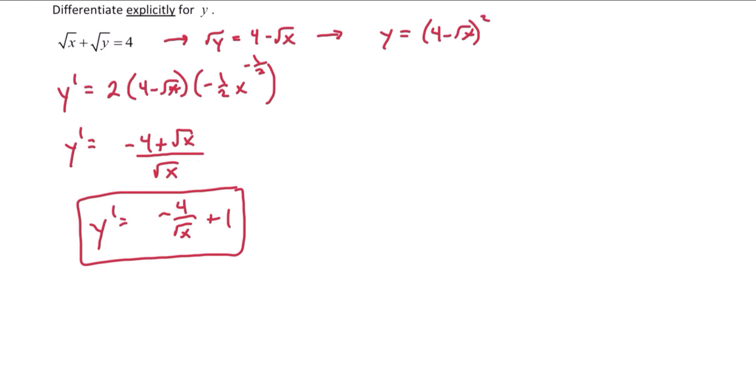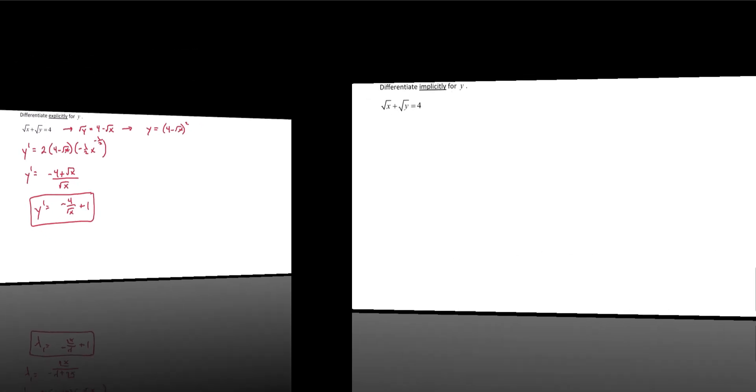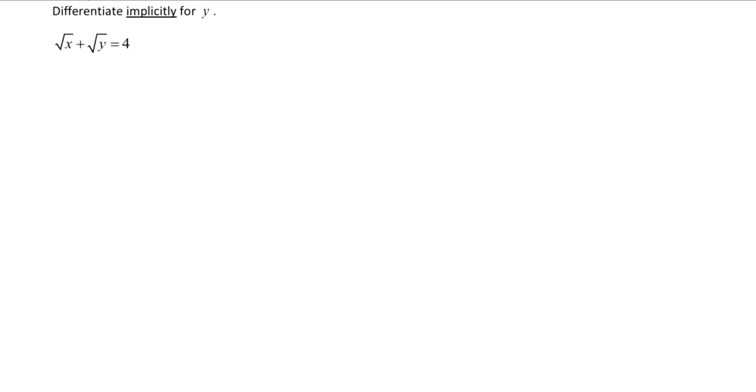The next thing we're going to do is implicitly differentiate the exact same equation and see if we get the same answer. This time we will differentiate implicitly for y. Notice it's the same equation. The first thing we do is take the derivative with respect to x on both sides of the equation.